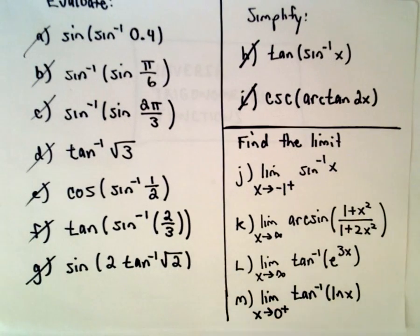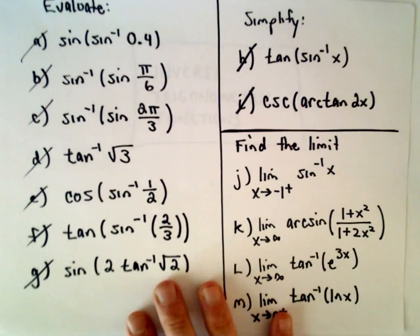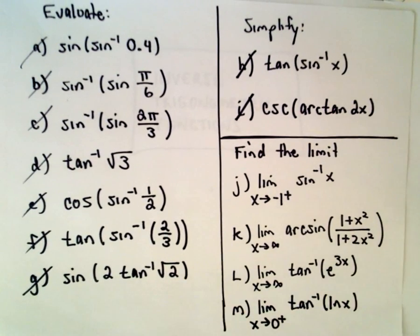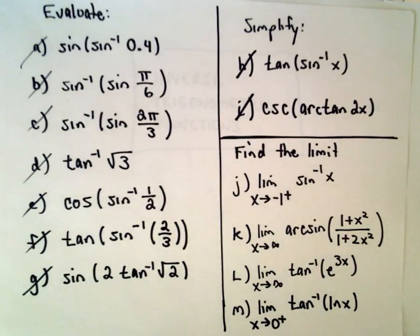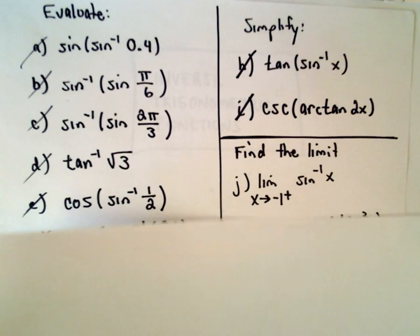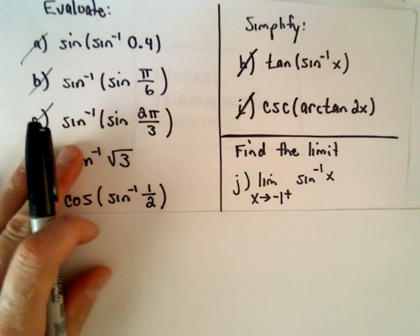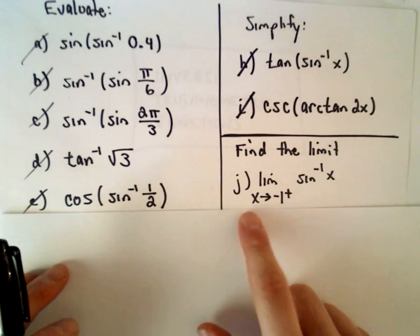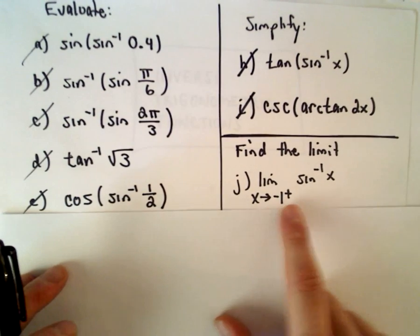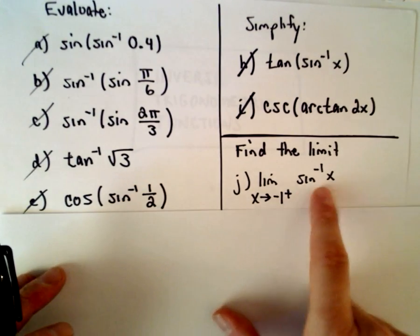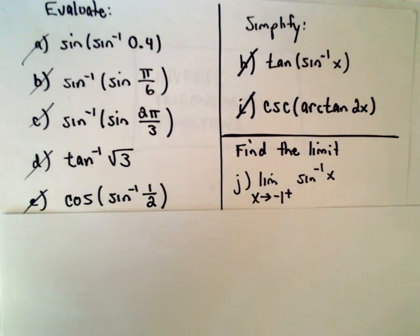Here we're going to do the last few examples involving inverse trig functions, and I'm going to do some limits involving inverse trig functions. So part J, we've got the limit as x approaches negative 1 from the right of inverse sine x.